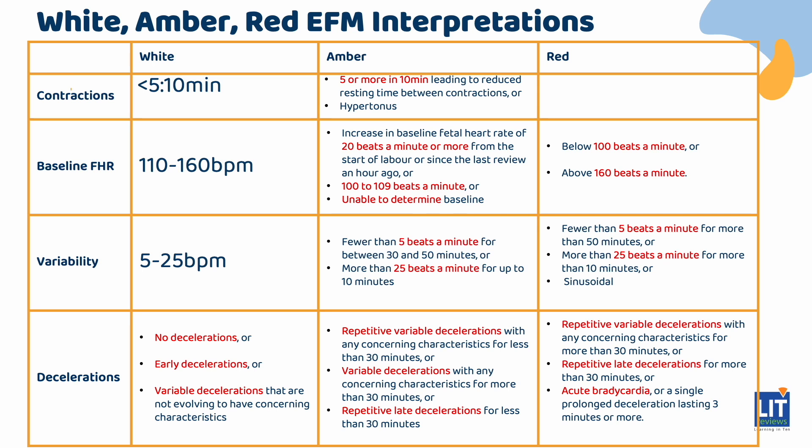The EFM is interpreted as red when baseline fetal heart rate is below 100 beats per minute or above 160 beats per minute; variability is fewer than 5 beats per minute for more than 50 minutes, or more than 25 beats per minute for more than 10 minutes, or sinusoidal; there are repetitive variable decelerations with any concerning characteristics for more than 30 minutes; repetitive late decelerations for more than 30 minutes; acute bradycardia is present; or there is a single prolonged deceleration lasting 3 minutes or more.